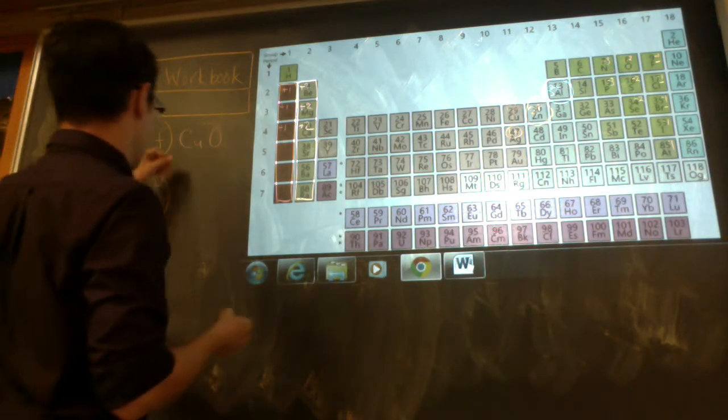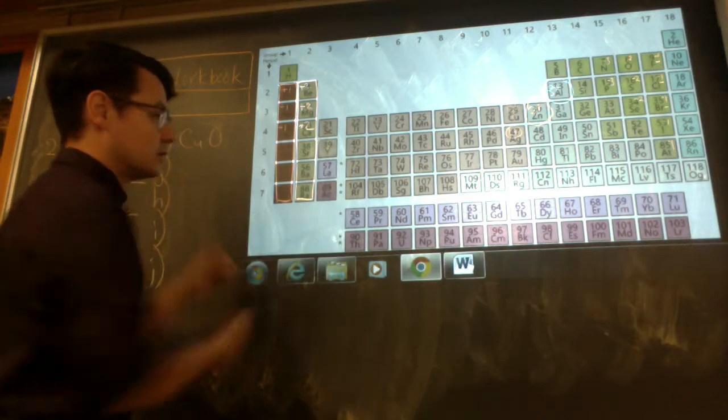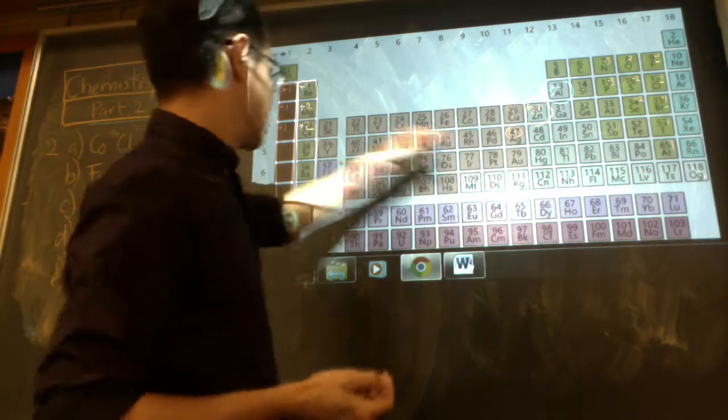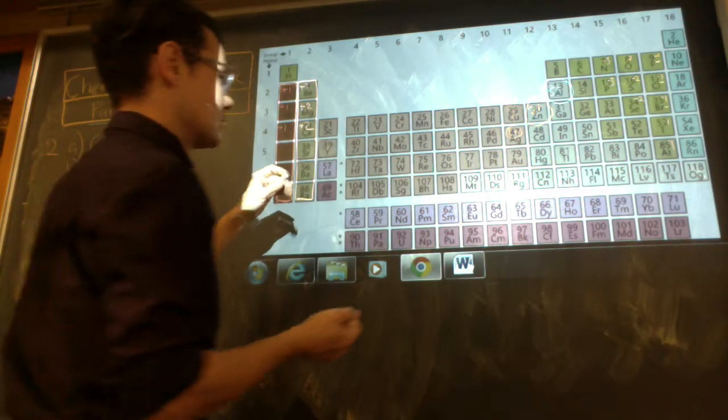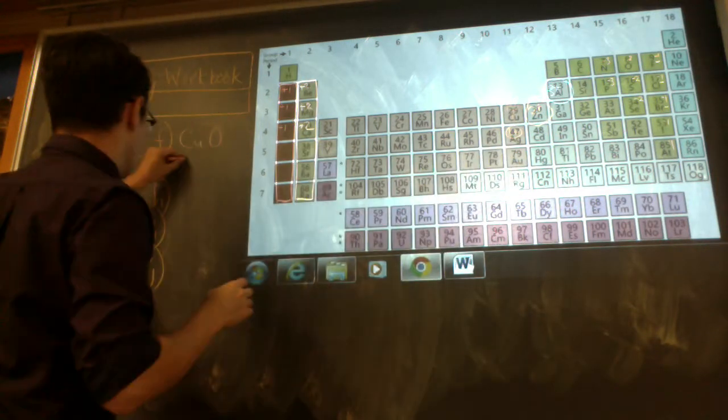Gold(I) arsenide. Alright, so gold is sometimes tricky. It's Au. There it is, number 79, Au.